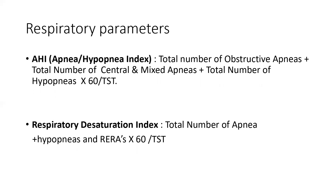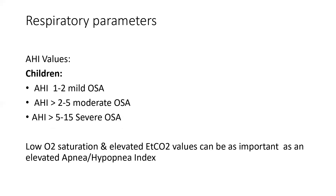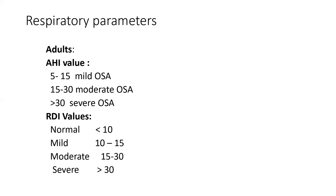AHI is the number of apneas and hypopneas per hour of sleep, and RDI is AHI plus RERA. In children, normal AHI should be less than 1; 1 to 2 is mild OSA; 2 to 5 is moderate; and 5 to 15 is severe. In children less than 6 years, end-tidal or transcutaneous CO2 sensors are also used to measure carbon dioxide levels. In adults, AHI of 5 to 15 is mild OSA; 15 to 30 is moderate; and more than 30 is severe, and likewise for RDI.